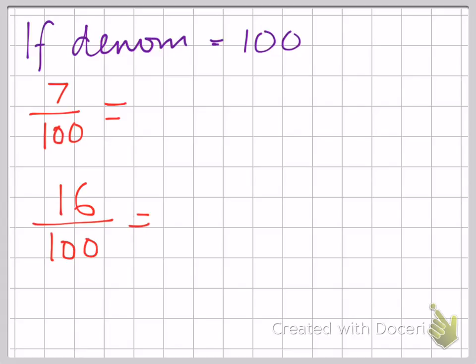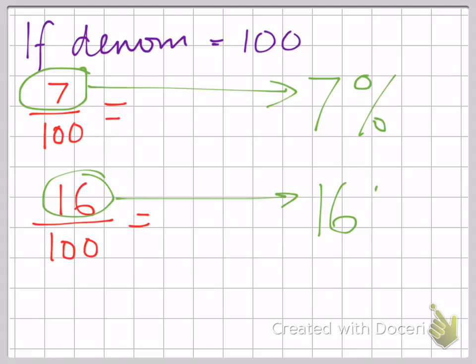The simplest ones that you may be presented with are where you're given a fraction with a 100 on the bottom. So because percent means out of 100, this top number is actually your percentage. 7 out of 100 is 7%. So just circle the top number and that becomes your percentage.